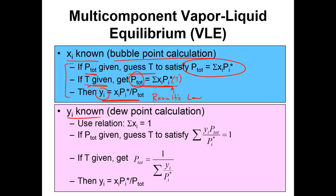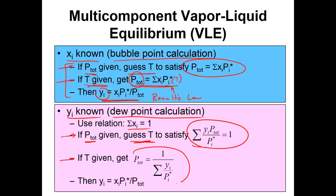For a dew point calculation where yᵢ is known, we use the relation that the summation of xᵢ equals 1. If P_total is given, we guess T to satisfy this equation. If T is given, we calculate P_total directly. The vapor pressures are functions of temperature, and we use Raoult's Law to get our xᵢ's. That covers both dew point and bubble point calculations.